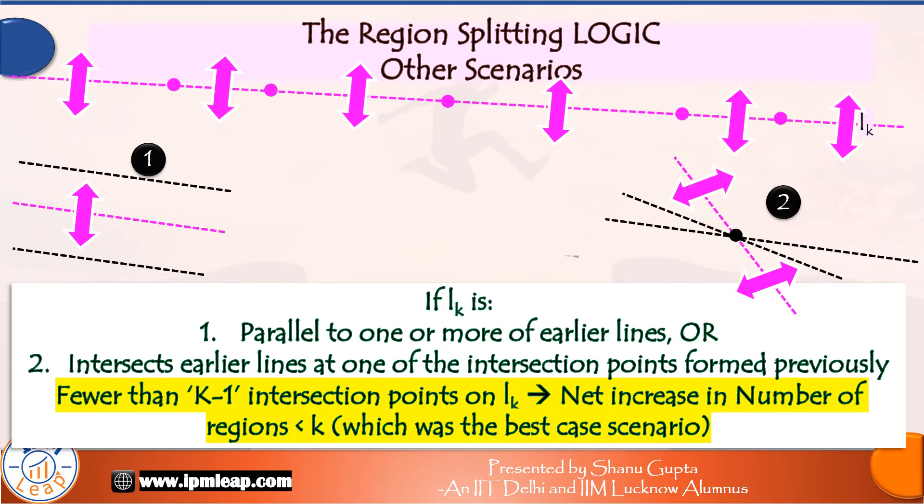And this was our best case scenario where third line intersects other two at two unique points. And thus, it passes through and splits three regions and thus increases three regions on a plane. So, hope you have understood the region splitting logic well.